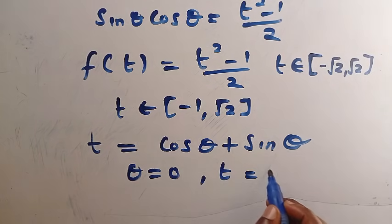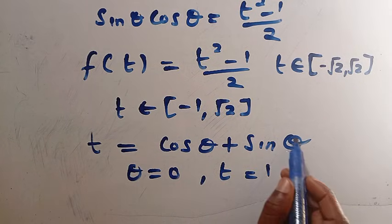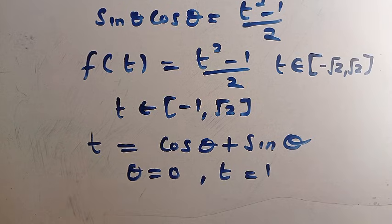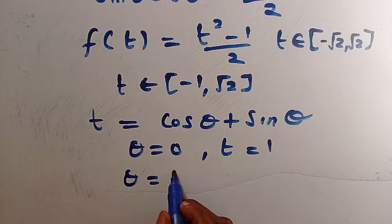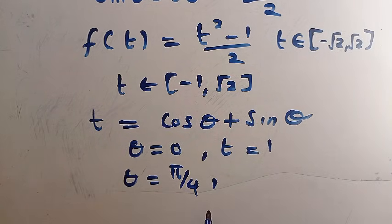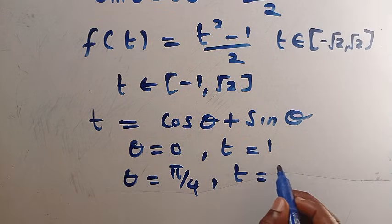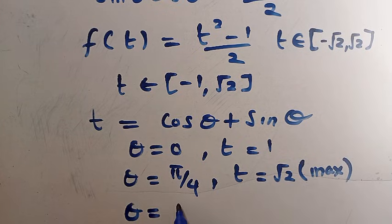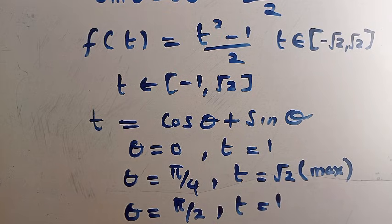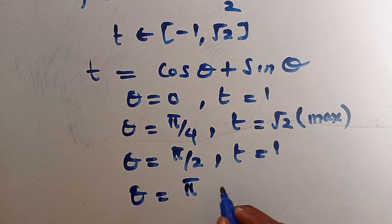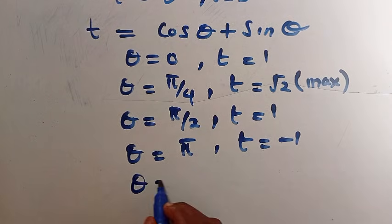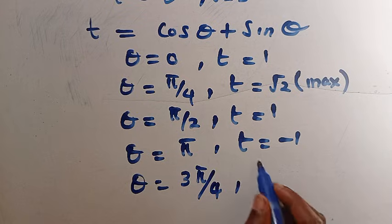If θ = 0, then t = cos 0 + sin 0 = 1 + 0 = 1. If θ = π/4, then t = √2, which is the maximum. If θ = π/2, then t = 1. If θ = π (180°), then t = −1. And if θ = 3π/4, then t = 0. Continuing in this way, the values rotate.